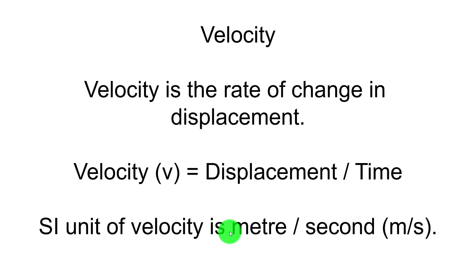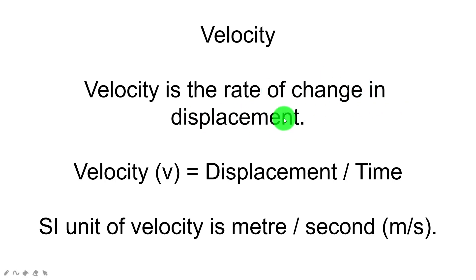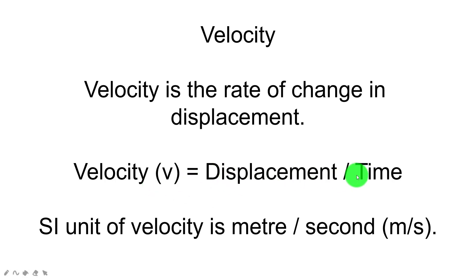Now let us switch over to velocity. Velocity is the rate of change of displacement — remember, displacement is the shortest distance between two points. Velocity holds the same relation as speed; you simply replace distance with displacement. So velocity equals displacement divided by time, and the SI unit is meter per second.